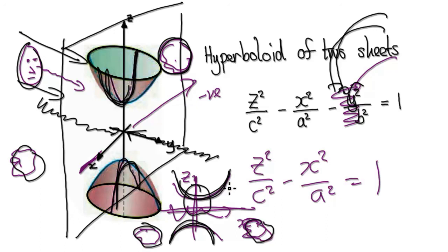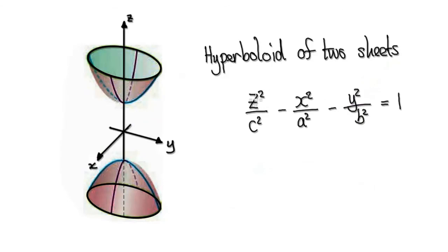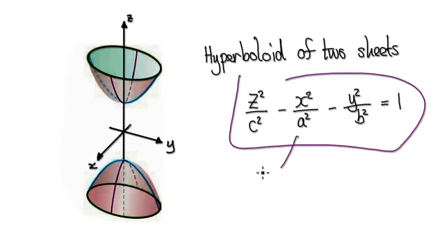So that's why this equation here will yield this hyperboloid of two sheets.